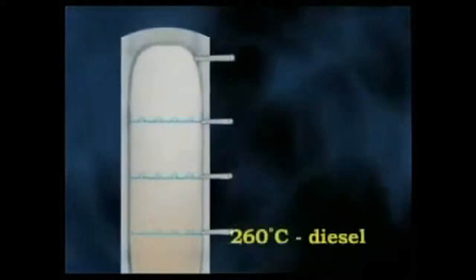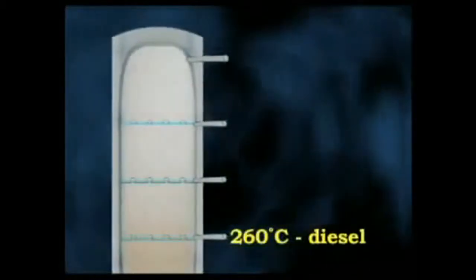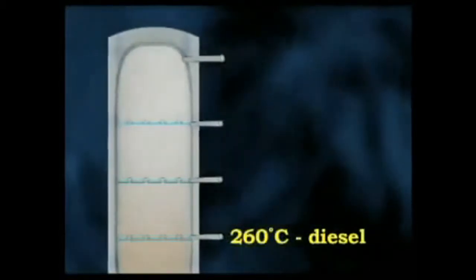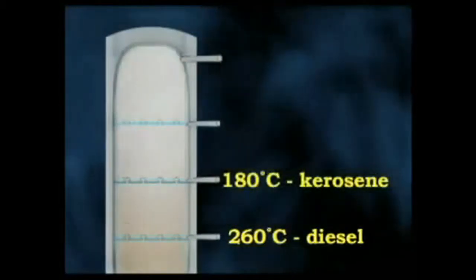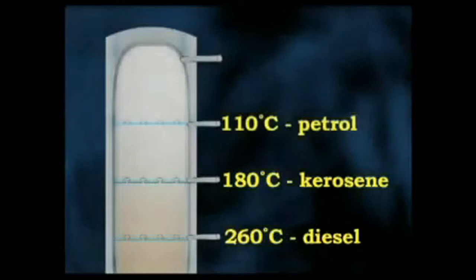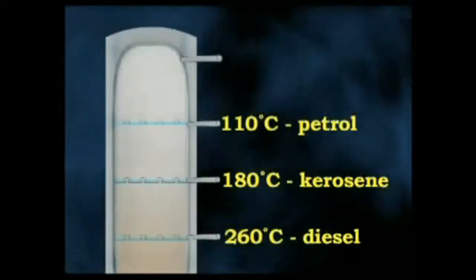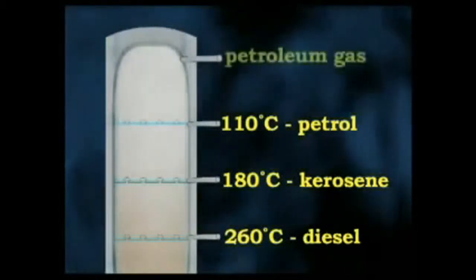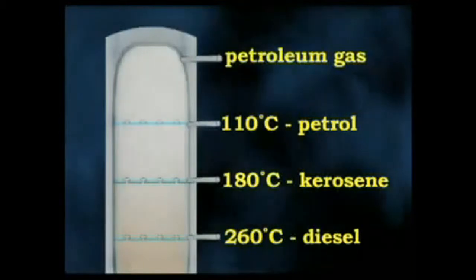But at around 260 degrees, diesel condenses out of the gas. At around 180 degrees, kerosene condenses out. Petrol or gasoline condenses out at around 110 degrees, while petroleum gas is drawn off at the top.